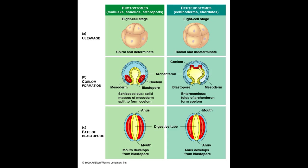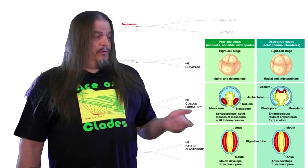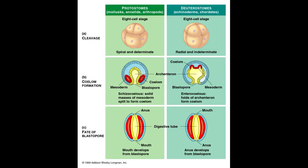After gastrulation occurs, the archenteron extends all the way through the gastrula, forming an anus on one end and a mouth on the other. In protostomes — which are cephalopods, tardigrades, arthropods, etc. — the blastopore becomes the mouth while the anus forms second. In deuterostomes — echinoderms and chordates — the blastopore becomes the anus while the mouth forms second. Protostomes and deuterostomes also develop differently with regard to their mesoderm. In protostomes, the coelom develops from mesodermal tissue concentrated on opposite sides of the archenteron, called schizocoely. In deuterostomes, the coelom forms from mesodermal pockets that pinch off from the archenteron, called enterocoely.